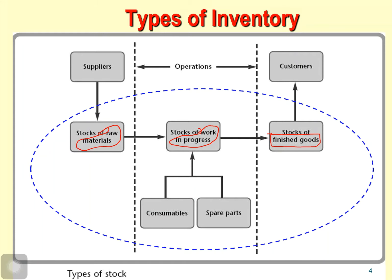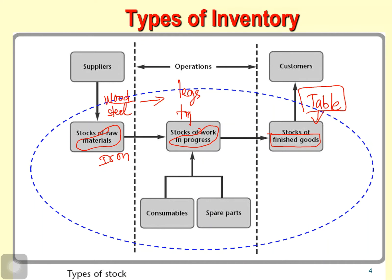Let me give you an example — I want to make a table. The table will be the finished inventory — the finished goods ready to deliver to the customer. Raw material might be wood, steel, or iron. Then from the wood, they will make legs or the tops of the tables, and after that they will assemble those components into the finished products.